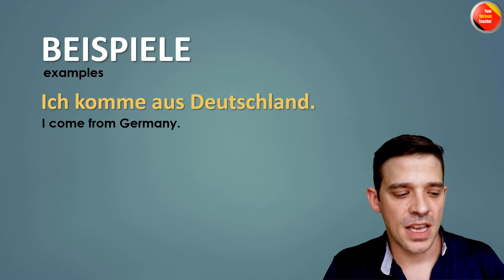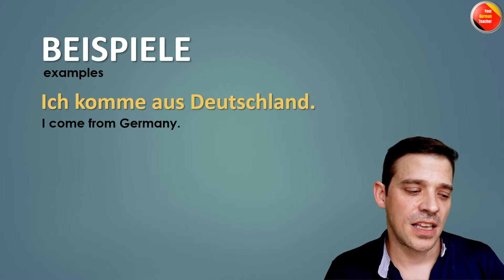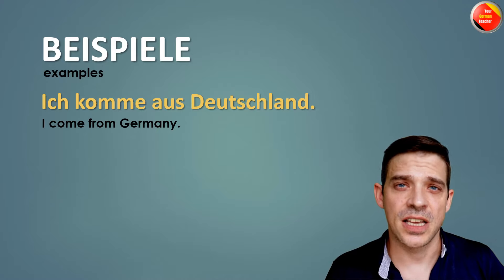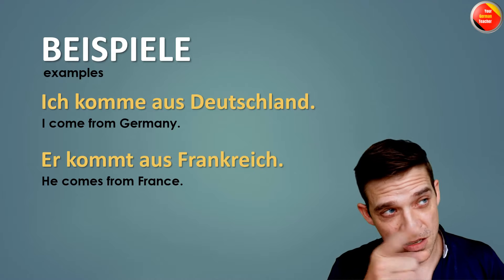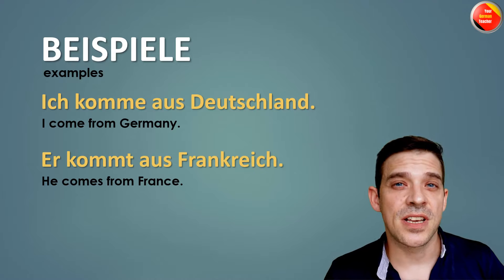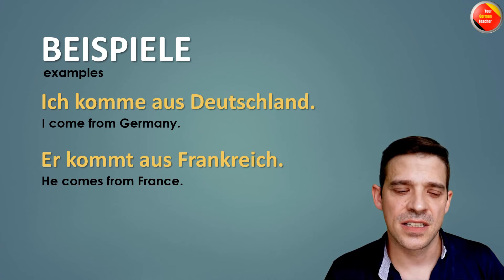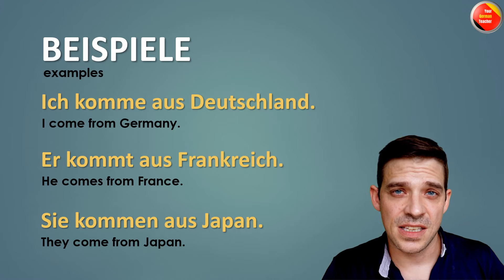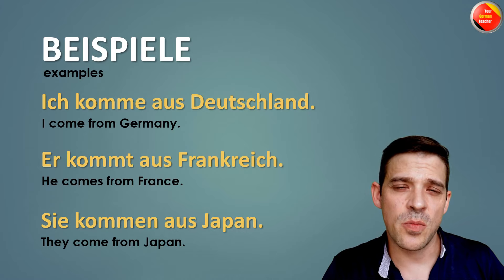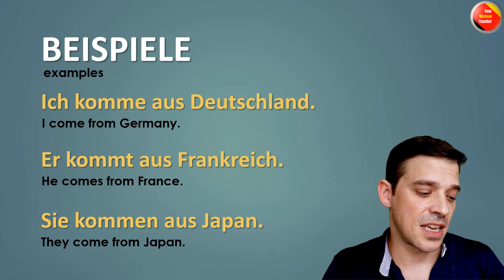Beispiele — Examples. Ich komme aus Deutschland. I come from Germany. Er kommt aus Frankreich. He comes from France. Sie kommen aus Japan. They come from Japan.